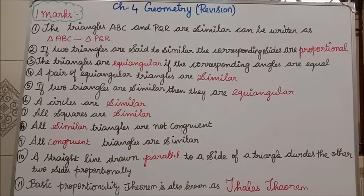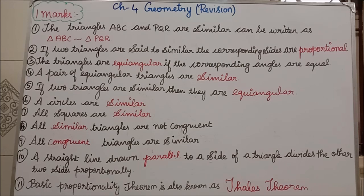Second question: if two triangles are said to be similar, then the corresponding sides are proportional. Proportional means: if you take triangle ABC and PQR, you will write AB divided by PQ is equal to BC divided by QR. That is the proportional — proportional means divides.